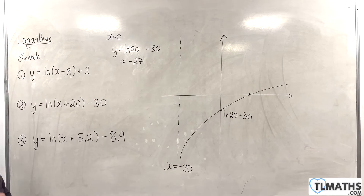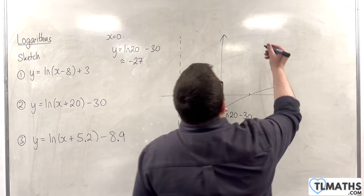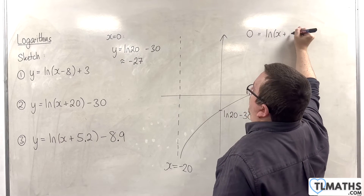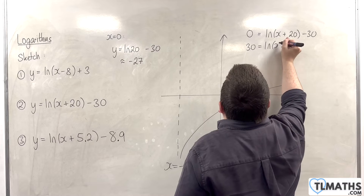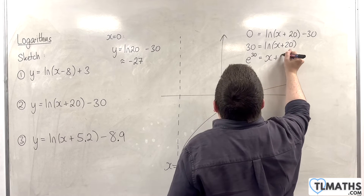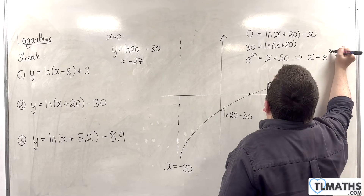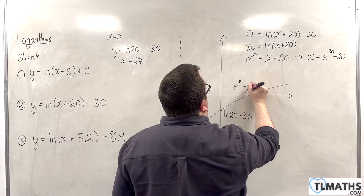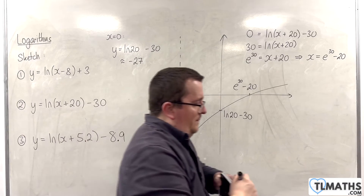The only other point I'm interested in is where it crosses the x-axis, which is when y is 0. So 0 equals the natural log of x plus 20 take away 30. Add the 30 to both sides, then e both sides. So e to the power of 30 is equal to x plus 20. Then subtract 20 from both sides, so x is e to the 30 take away 20. That is the exact point where it will cross the x-axis. So, that's number 2.